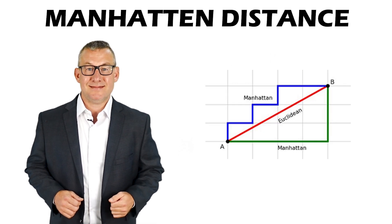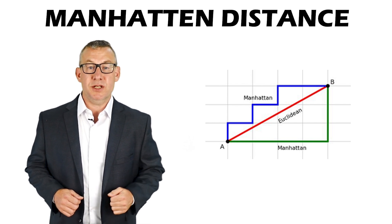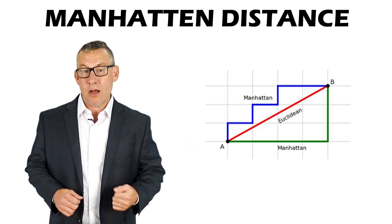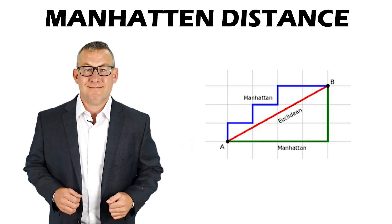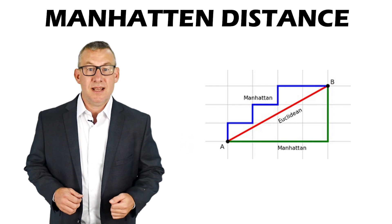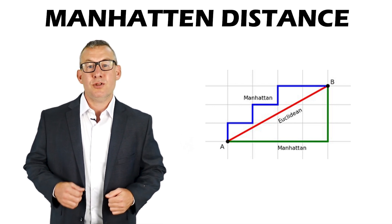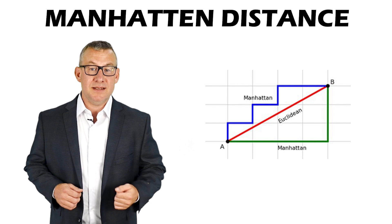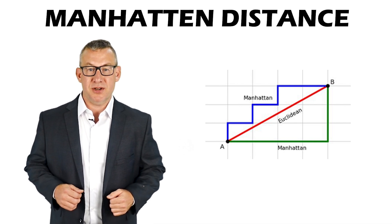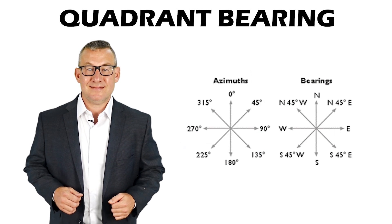Manhattan distance is the distance between two points measured along allowable routes of travel — for example, the distance a car must travel in a city like Manhattan to travel between two points. This is also known as taxicab geometry.